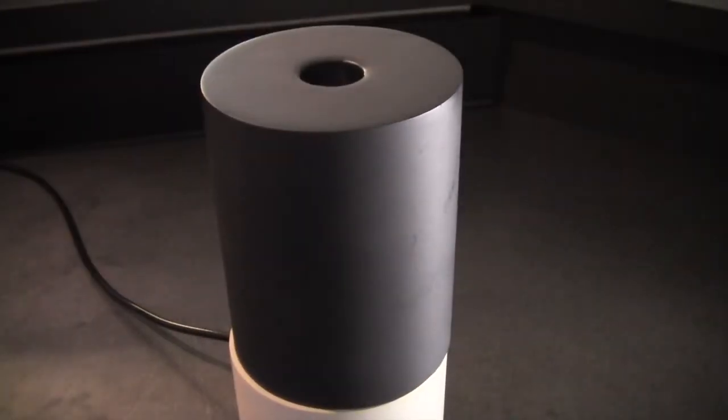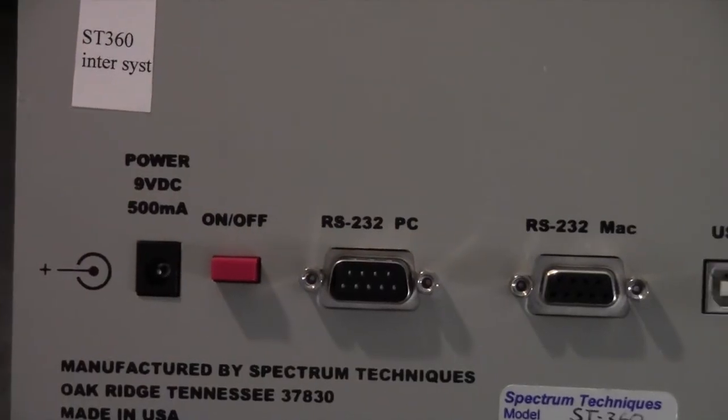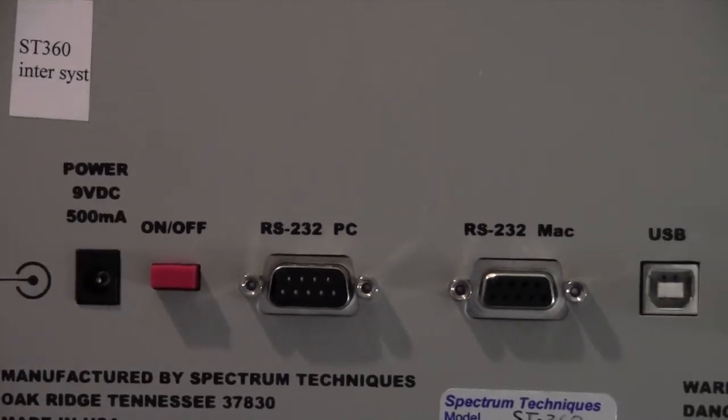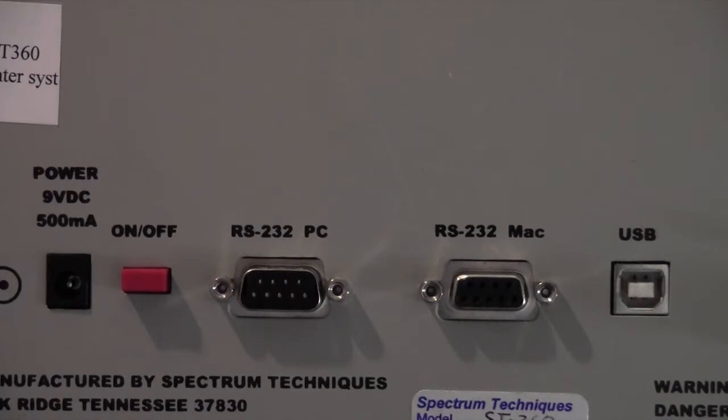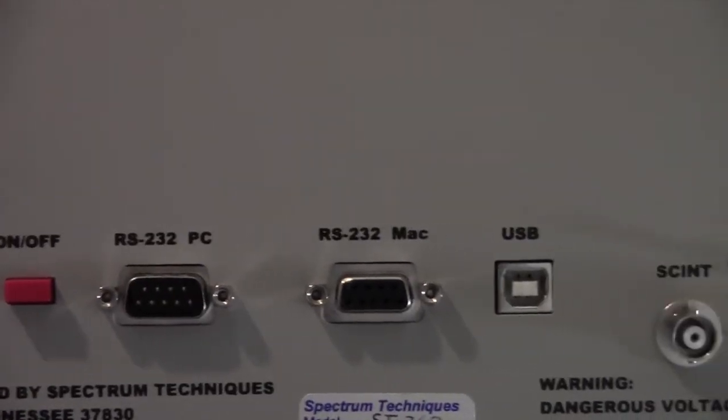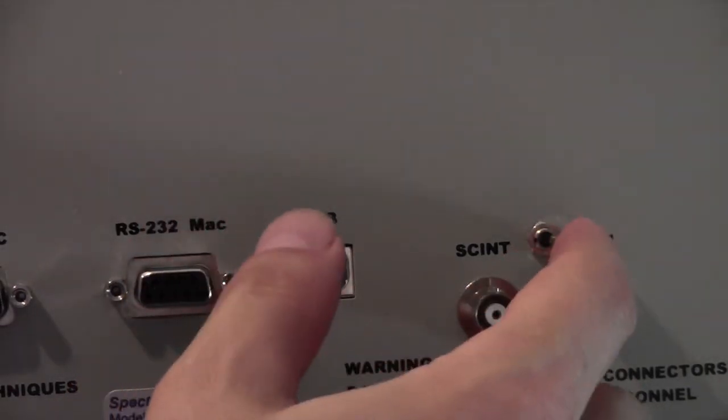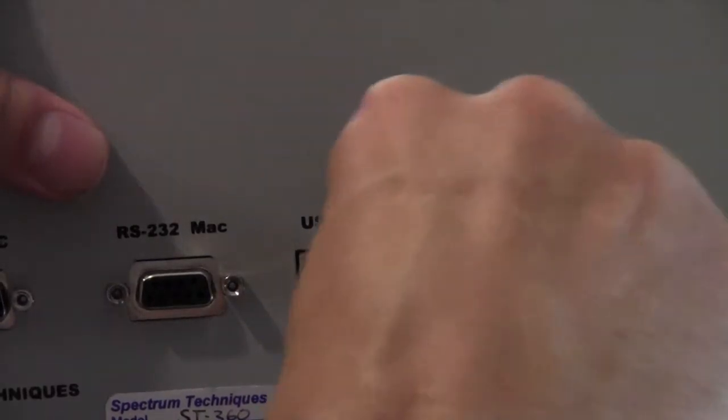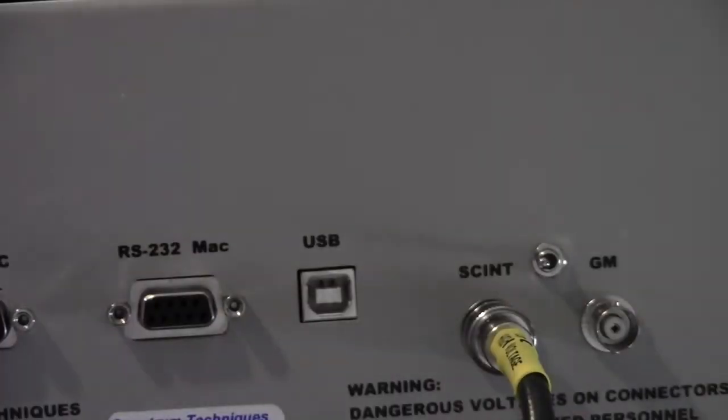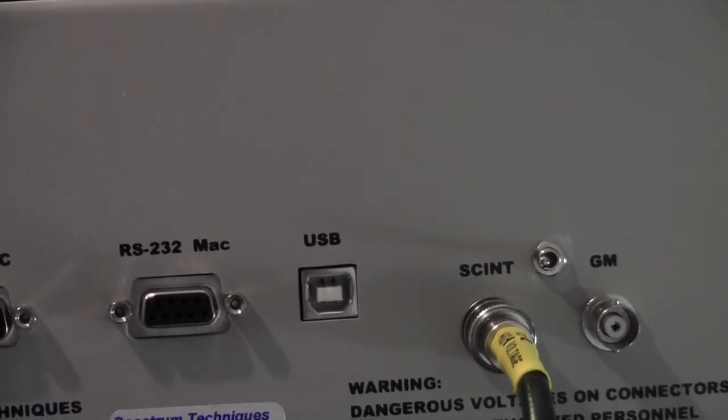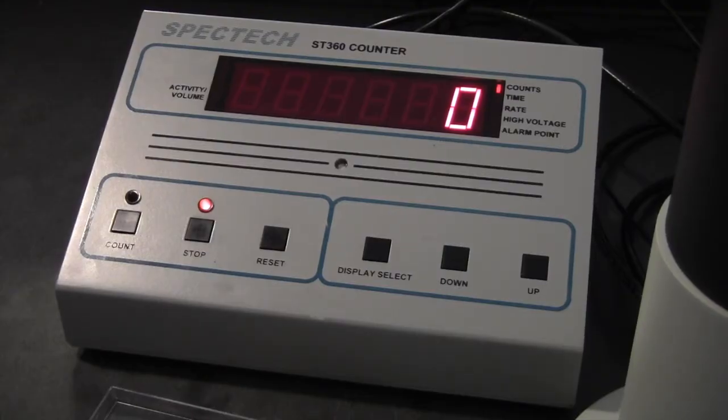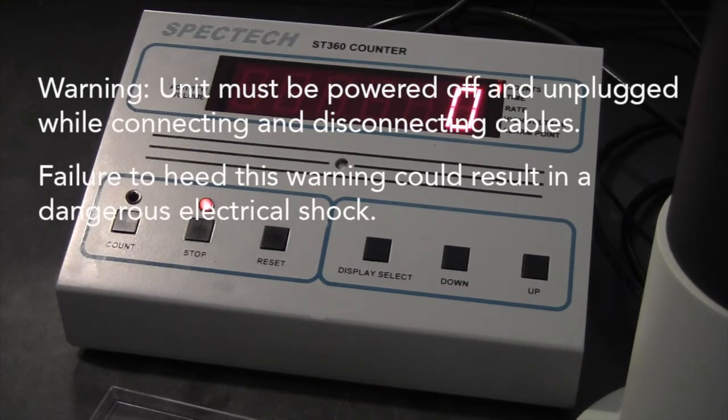Here is the rear of the ST360. You can see the power jack, the on-off switch, the RS-232 ports for both PC and Mac, but mostly we use USB these days. We have cable connections for scintillation and GM probes. Today we'll be using a scintillation probe. Very important, make sure that the unit is powered off and unplugged while connecting or disconnecting the detector cable. Failure to do so could result in a dangerous shock from a power surge.